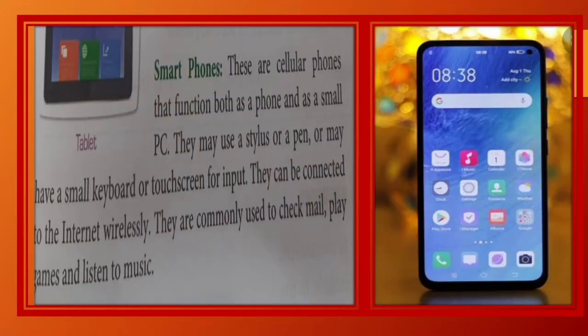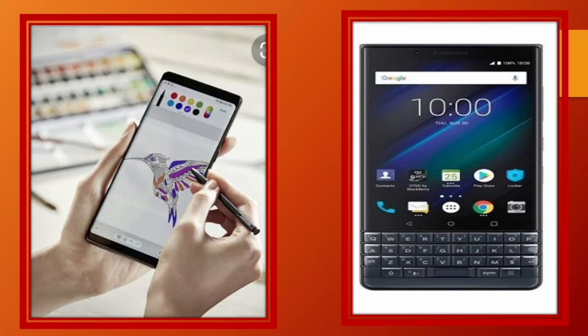Next is smart phones. These are cellular phones that function both as a phone and as a small PC. Means, smart phones mein ek phone aur computer dono ke features hota hai. They may use a stylus or a pen. Aur may have a smaller keyboard or touch screen for input. Is mein data entry karne ke liye, ya to, ek special type ka pen milta hai. Usse use karte hain. Jinhe sirf phone par hi use kiya ja sakta hai. Ya phir touch screen keyboard se data feed kiya jata hai.